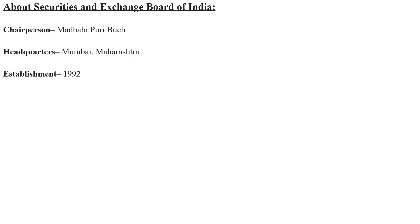About SEBI — the chairperson is Madhavi Puri Buch, headquarters is in Mumbai, Maharashtra, and it was established in 1992. These four companies — Fedfina, IREDA, EPAC Durables, and Suraj Estate Developers — received nod from SEBI to float their IPOs. Before coming to IPO, a company has to get approval from SEBI, which is the Securities and Exchange Board of India, the approving authority for this listing.